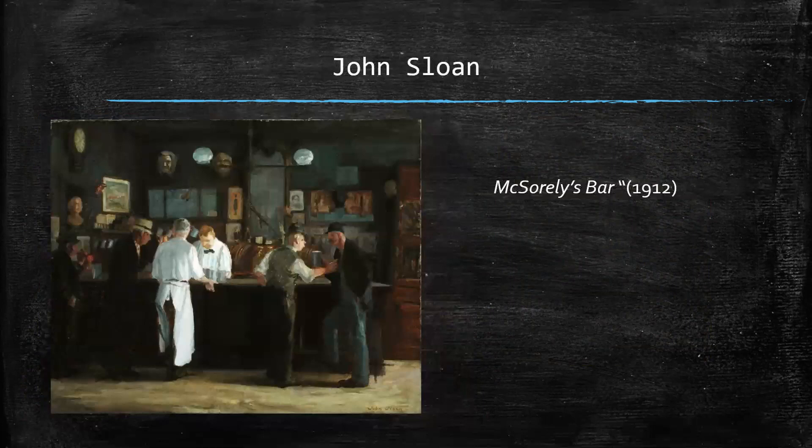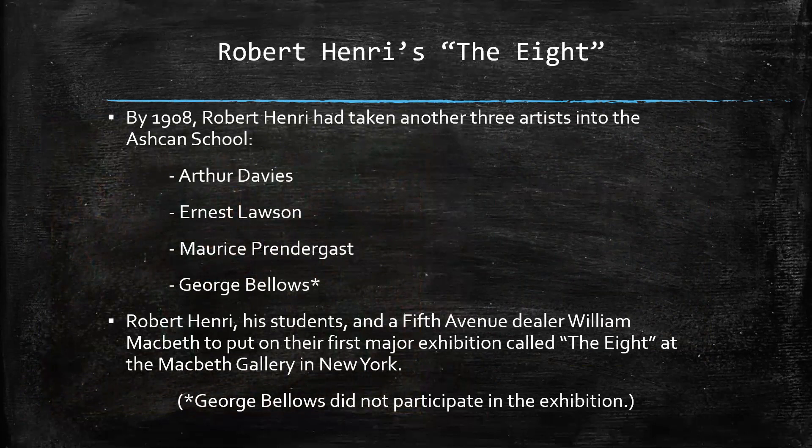Later, Robert Henri took on a few other students — another three. George Bellows was not included in the Eight. The Eight would be Robert Henri, those three students, and the previous four students, who worked together with Fifth Avenue dealer William Macbeth to put on their first major exhibition called The Eight at the Macbeth Gallery in New York. George Bellows' art was not featured in this exhibition.